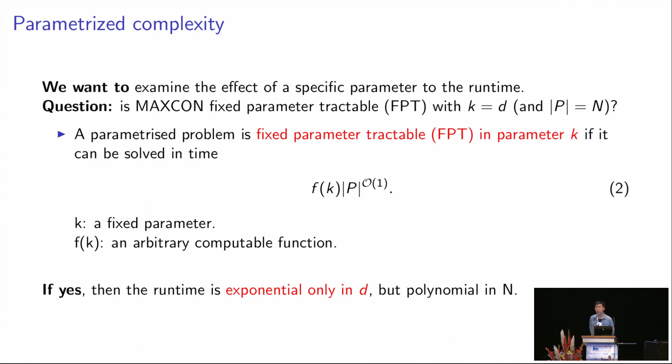So in the second part, we already know that we don't want to hope to solve MAXCON in polynomial time. Therefore we want to analyze the effect of certain parameters on the total runtime of MAXCON. For example, we want to ask the question, is MAXCON fixed parameter tractable, or FPT, in the dimension D? A parameterized problem is called FPT in some parameter K if it can be solved in time that is worst case exponential only to the fixed parameter K, but polynomial still to the input size. So we want to check whether we can set K equals to D here. And if the answer is yes, we know that the runtime is worst case exponential only to the dimension D. And if the application has a very low dimension, we can still hope to come up with an efficient algorithm to solve the MAXCON problem even though we have a large number of inputs.